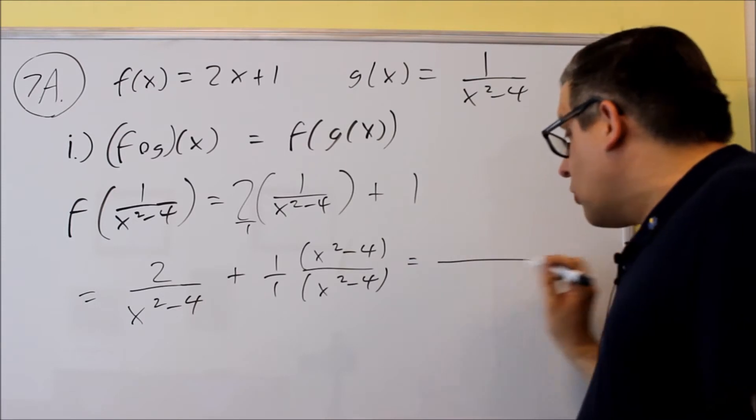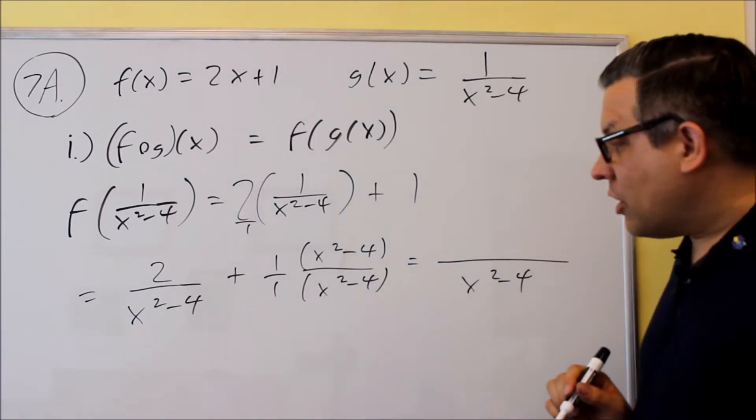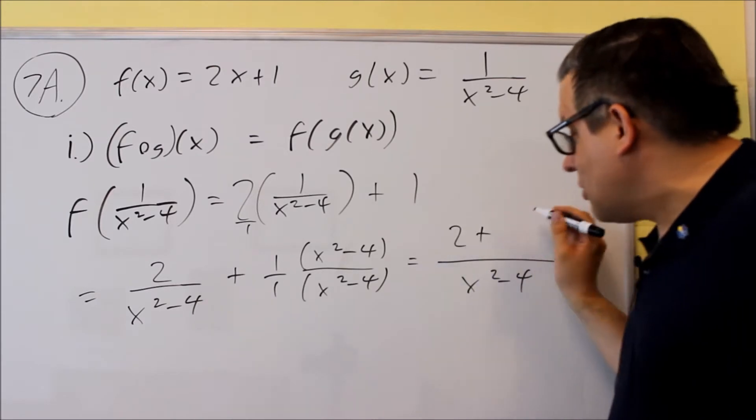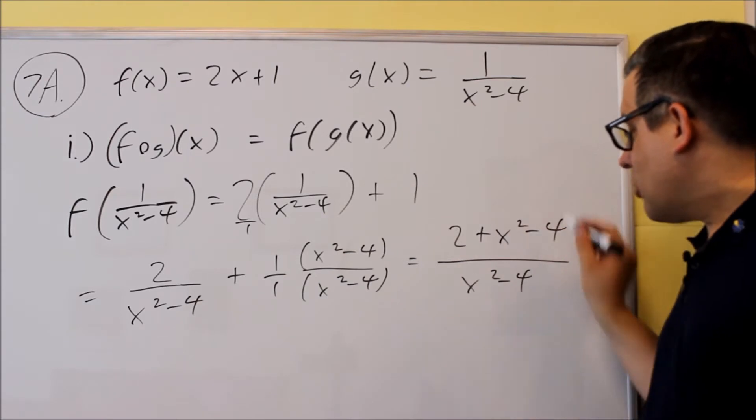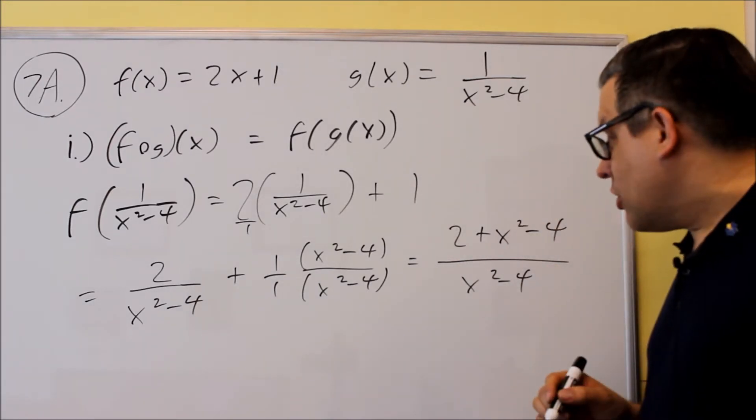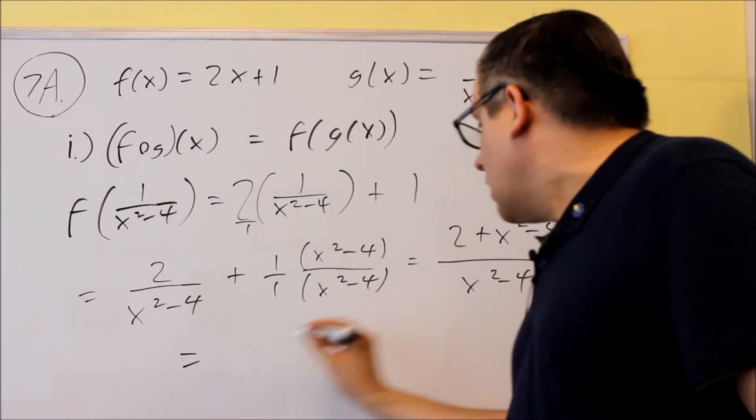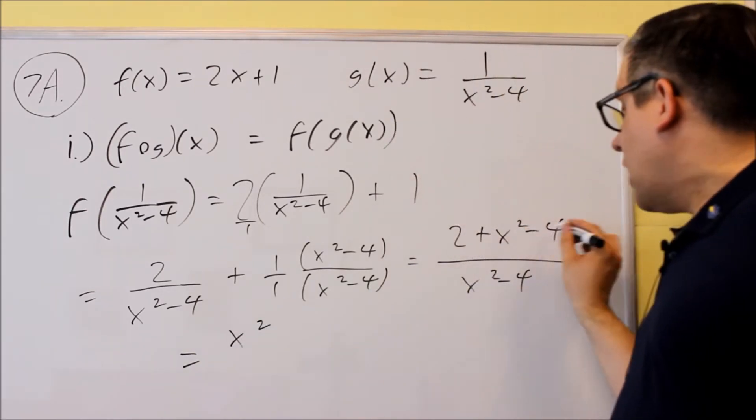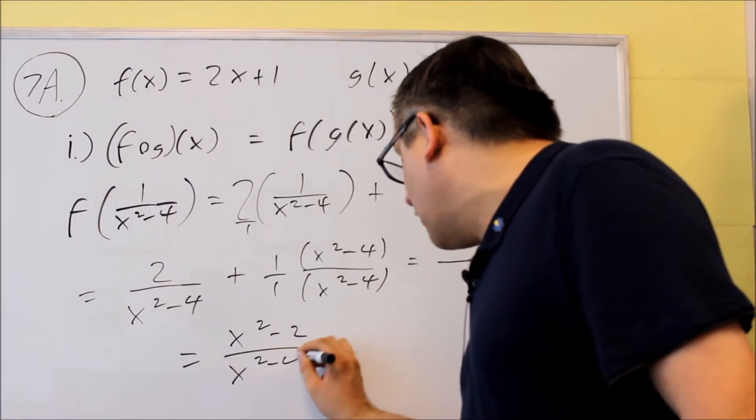So now I can write this as a single fraction. I have x squared minus 4 down below. On top, I have 2 plus x squared minus 4. 1 times that as itself, so I end up with this. The last thing I want to do is just simplify the top. When I simplify it, I'm going to get x squared, and I have minus 2, x squared minus 4.